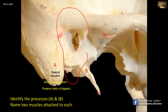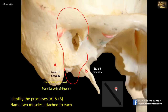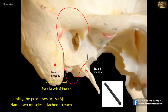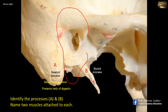The other process is the styloid process. The name describes its shape — it is like a stylus or pen. There are three muscles attached to the styloid process. Together with the stylohyoid ligament, they constitute the styloid apparatus. The three muscles are the stylohyoid, the styloglossus, and the stylopharyngeus. As their names indicate, they are distributed to the structures indicated by their names.